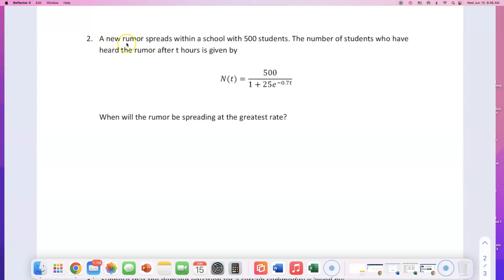A new rumor spreads within a school with 500 students. The number of students who have heard the rumor after t hours is given by N(t) equals 500 over 1 plus 25e to the negative 0.7t. So that's the function that will give us how many people heard this rumor.